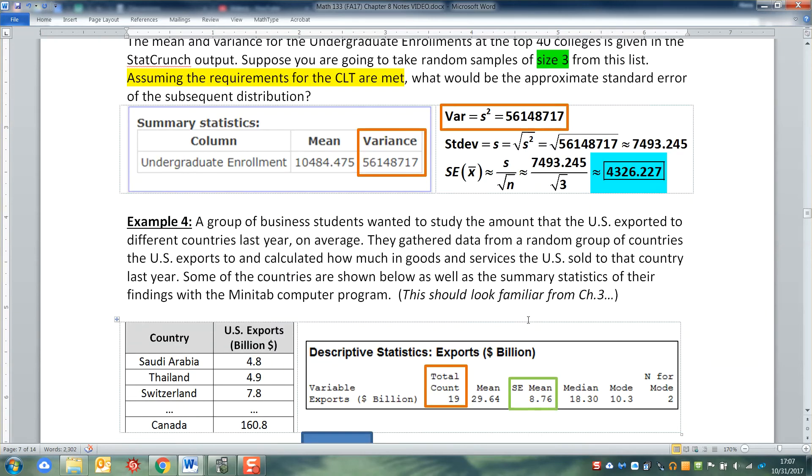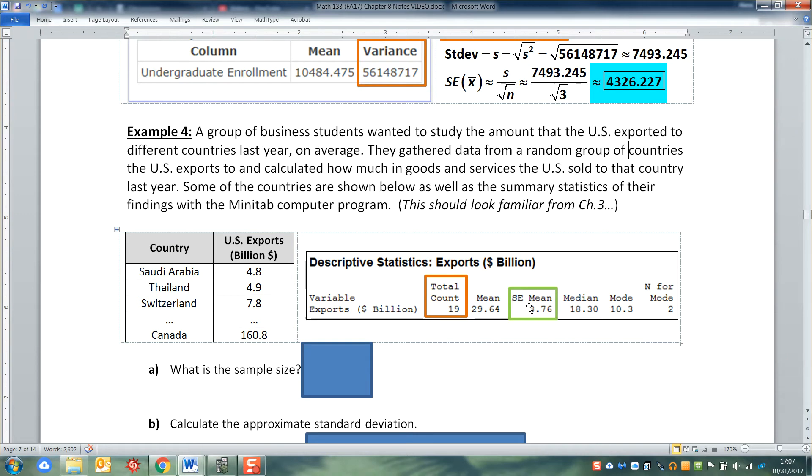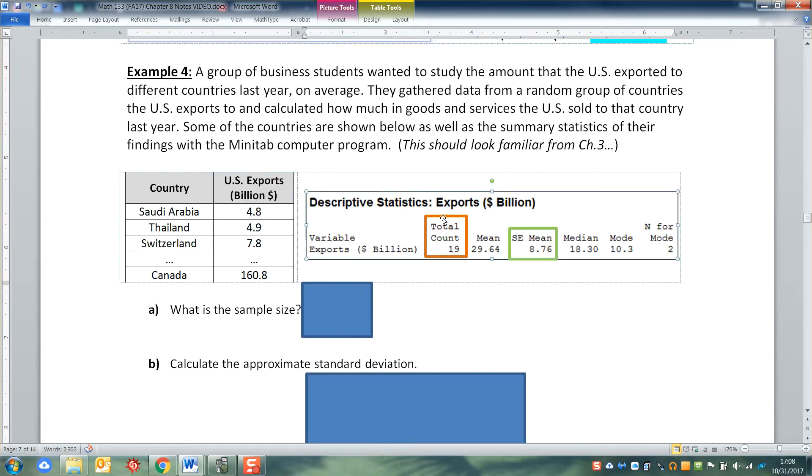In the next example, I want to give you standard error and have you work your way backwards. So we have this data set that we learned about in Chapter 3. You have a group of students that wanted to study U.S. exports. They get a random sample of countries and have their computer output, descriptive statistics output right here. The first thing I want to know is what is the sample size. You can see right here I've got a little orange box around it. That's the sample size, it's called the count. So N is equal to 19 for us.